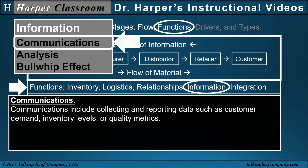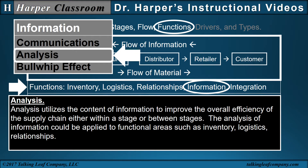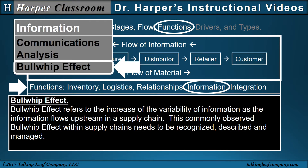Information. Communications include collecting and reporting data such as customer demand, inventory levels, or quality metrics. Analysis utilizes the content of information to improve the overall efficiency of the supply chain either within a stage or between stages. The analysis of information could be applied to functional areas such as inventory, logistics, and relationships. Another key term in supply chain management is bullwhip effect. Bullwhip effect refers to the increase of the variability of information as the information flows upstream in a supply chain. This commonly observed bullwhip effect within supply chains needs to be recognized, described, and managed.